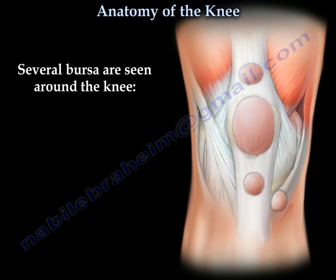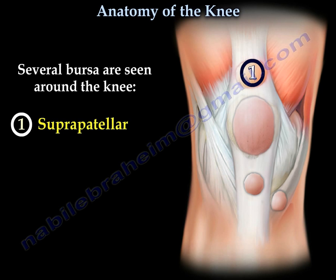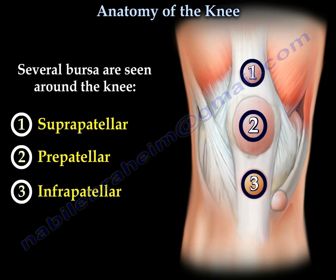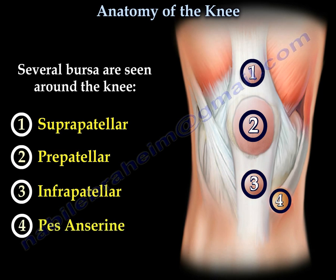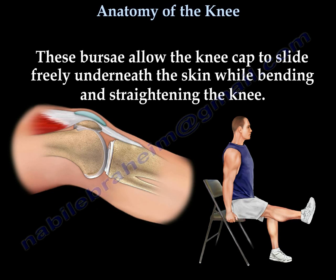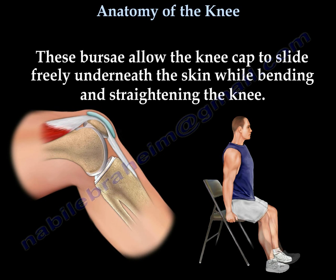Several bursa are seen around the knee. These include the suprapatellar bursa, the prepatellar bursa, the infrapatellar bursa, and the pes anserine bursa. These bursa allow the kneecap to slide freely underneath the skin while bending and straightening the knee.